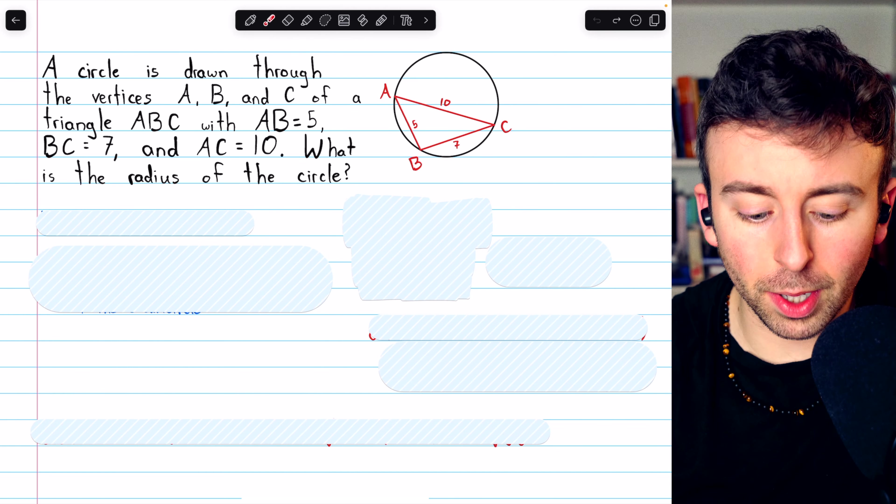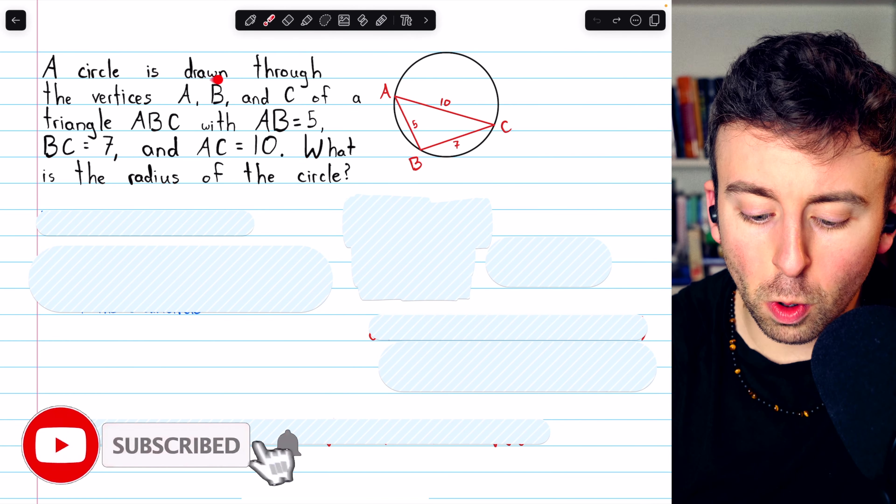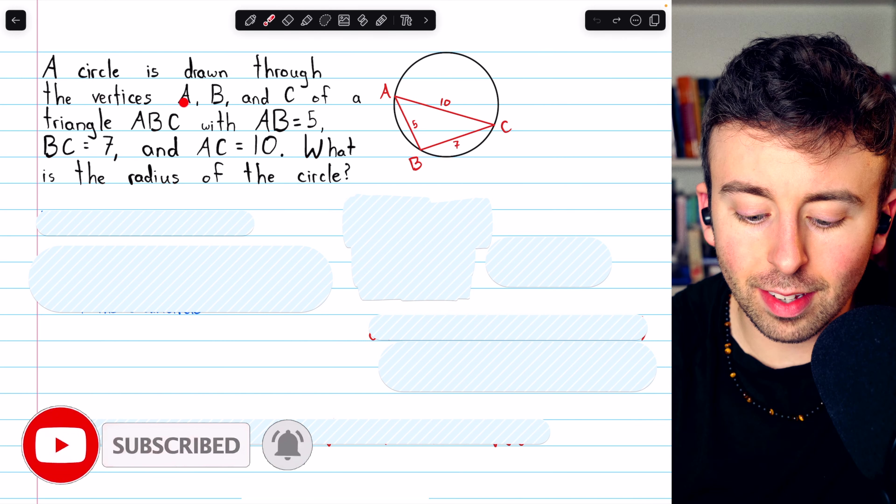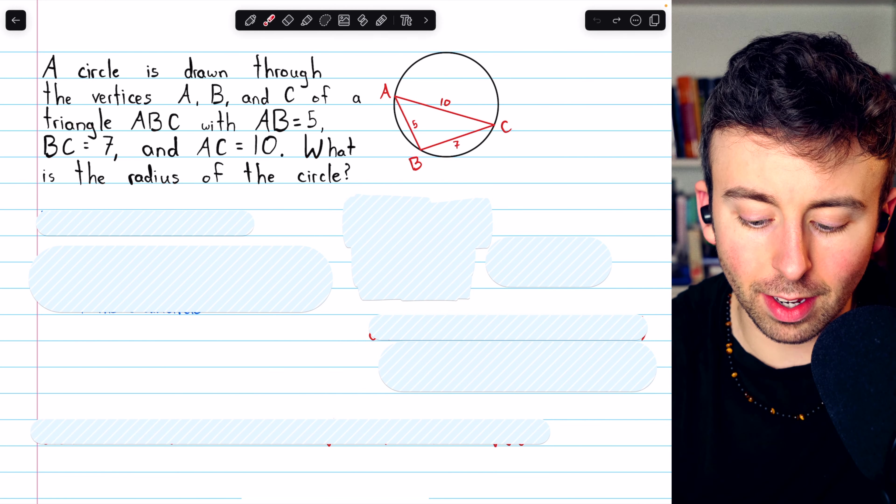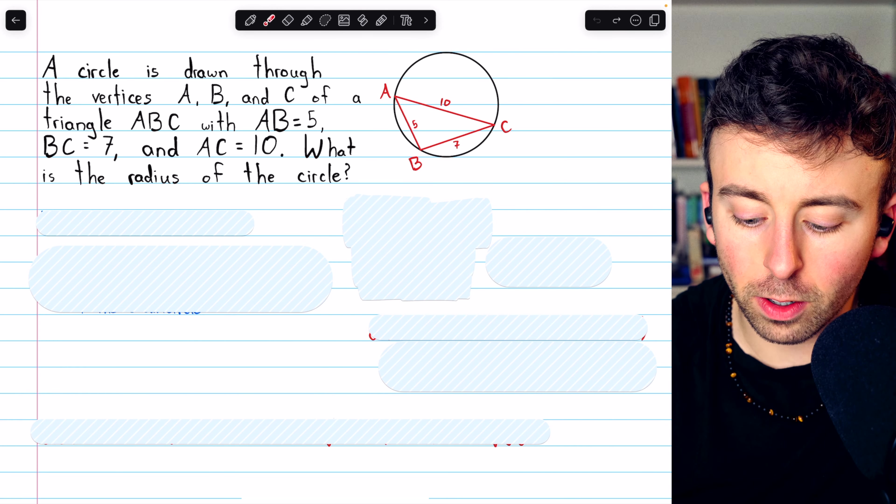Here's a nice geometry problem. A circle is drawn through the vertices A, B, and C of triangle ABC, as we can see here.